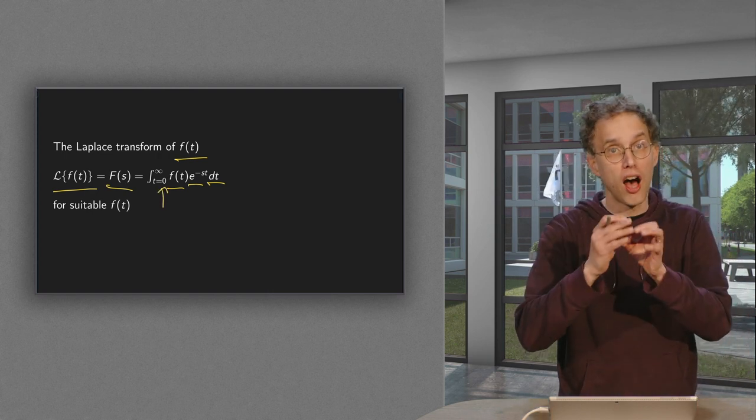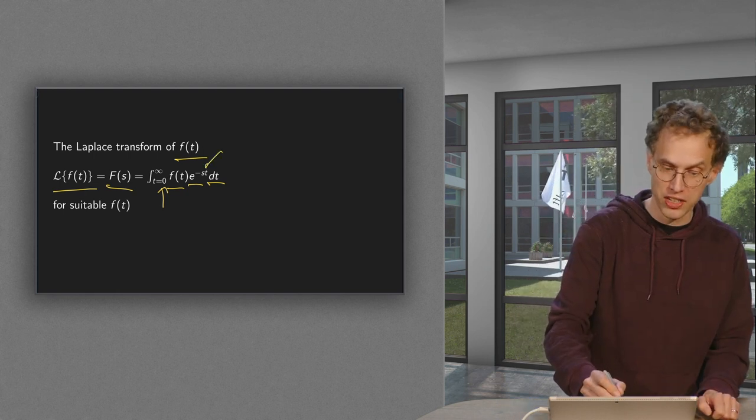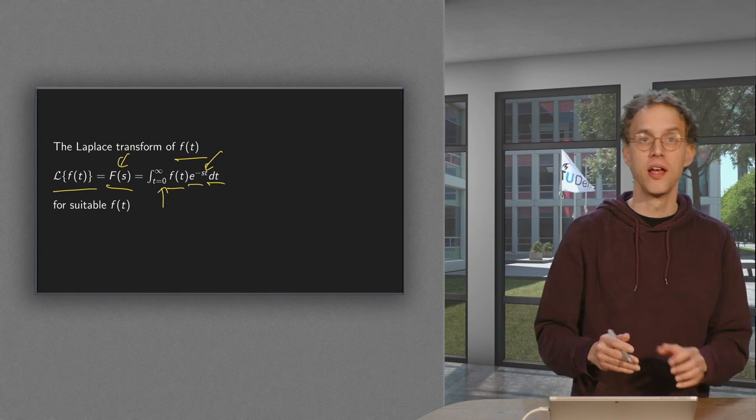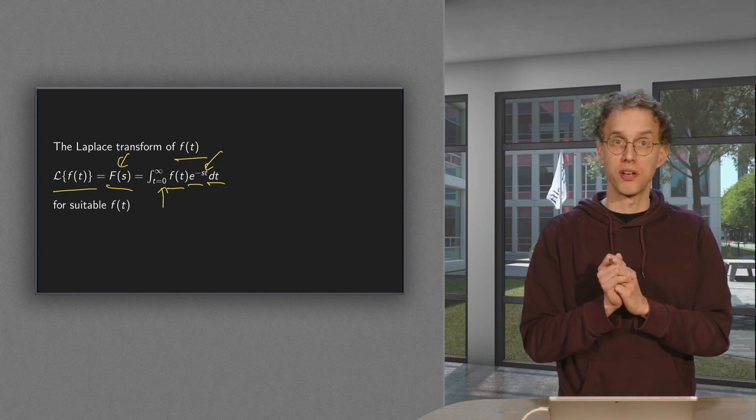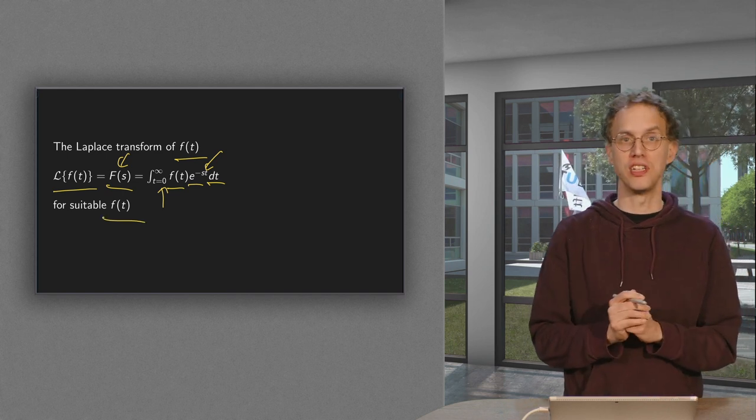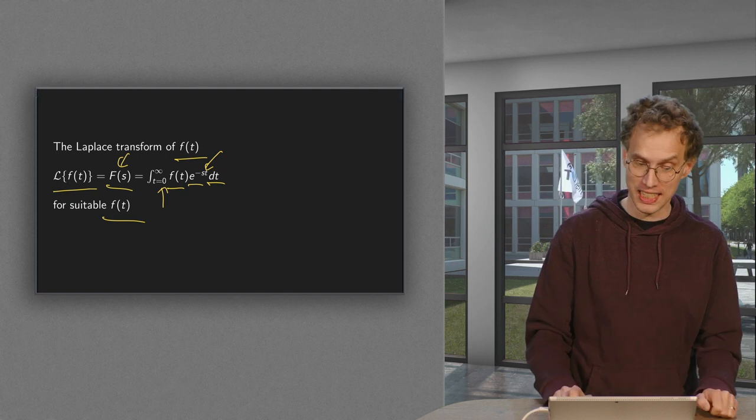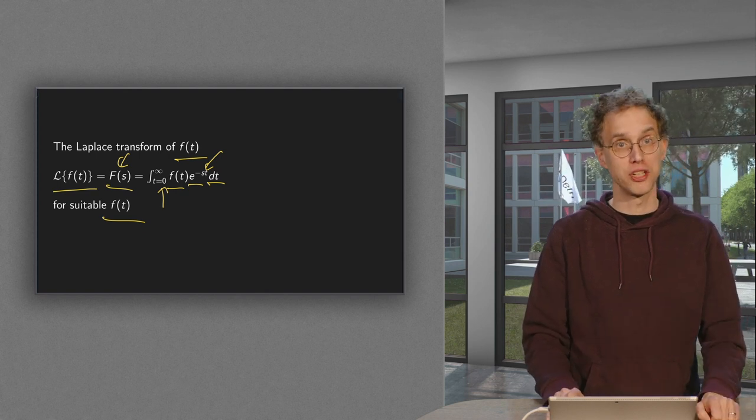So that means that after the integration the t is gone and you are left with an s. So you are left with some function f(s), and that is what our Laplace transform of f(t) is, for suitable f(t). I will look later into what this suitable means exactly. Let us do a few examples first.